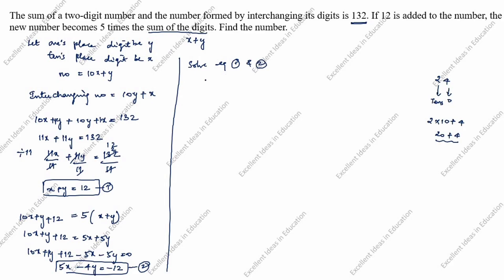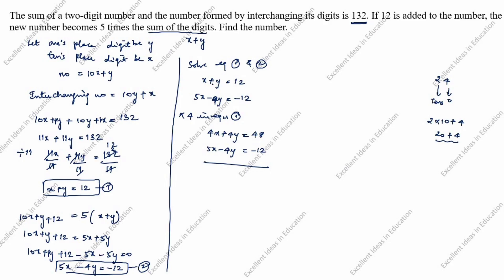Now we solve equations 1 and 2. Equation 1 is x + y = 12, and equation 2 is 5x - 4y = -12. Multiply equation 1 by 4: 4x + 4y = 48. Adding this to equation 2: 5x + 4x = 9x, and 48 - 12 = 36. So 9x = 36, which gives x = 4.